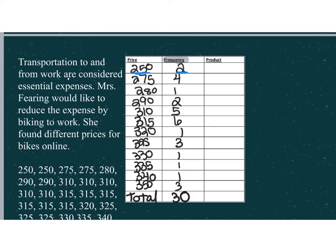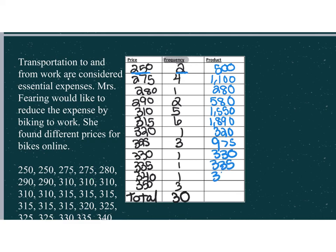So now how do we use that to get the mean? So here it says product. Well, what do I mean when I say product? What I mean is you're going to take the price and multiply it by how many times it shows up. So $250 times 2 is $500. $275 times 4 is $1,100. $280 times 1 is $280. $290 times 2 is $580. $310 times 5 is $1,550. $315 times 6 is $1,890. $320 times 1 is $320. $325 times 3 is $975. $330 times 1 is $330. $335 times 1 is $335. $340 times 1 is $340. And $350 times 3 is $1,050. So now when it says total, I'm going to add all of those together. So I'm going to take $500 plus $1,100 plus $280 plus $580 all the way down. And when I do that, I get $9,250.